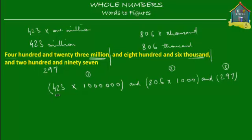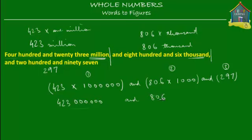What's the product of 423 and 1,000,000? It is 423 followed by six zeros — that's your 423 million in numerals. Next, when you multiply 806 by 1,000, you get 806 followed by three zeros — that's your 806,000 in numerals. And finally you have the digits two, nine, and seven.